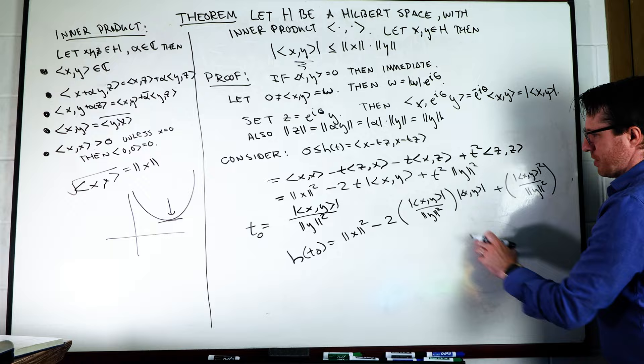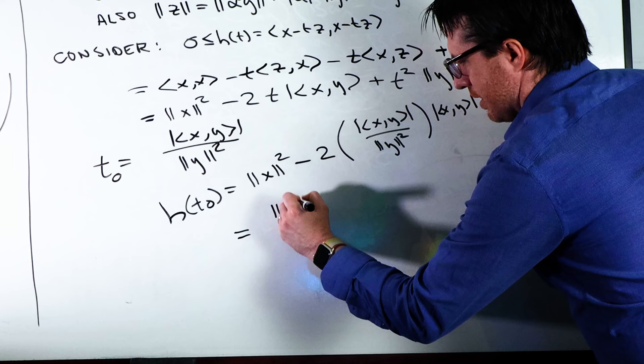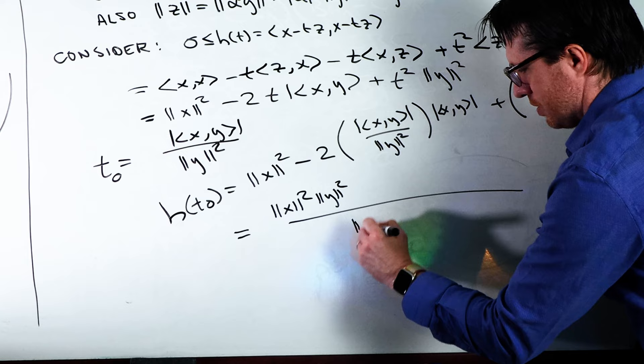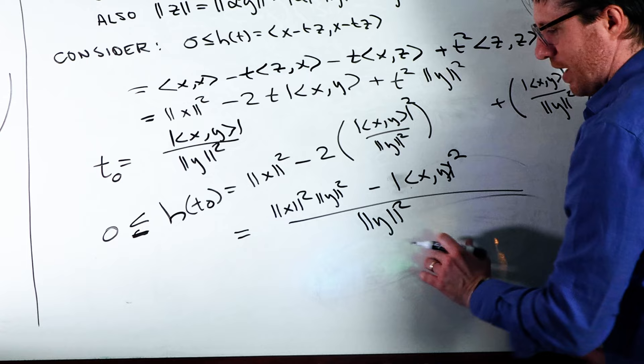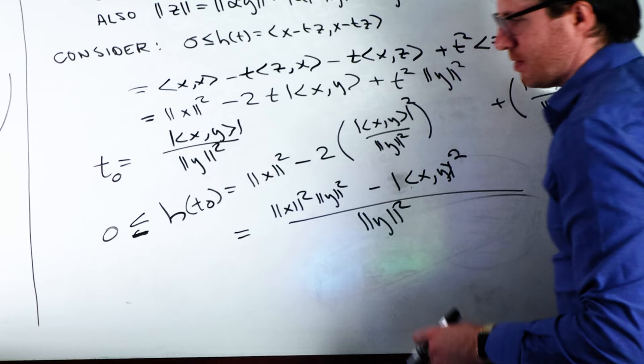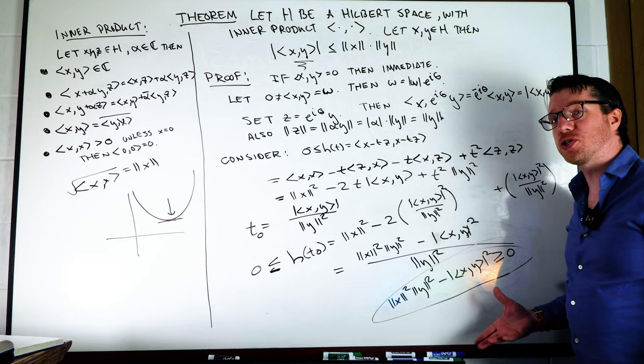I'm going to find a common denominator: ||x||^2 times ||y||^2, all of this divided by ||y||^2. This guy is going to combine with this guy to make a square. And so then these terms cancel, and it gives us this. We have a positive term on the bottom, and we have this is going to be bigger than or equal to zero, which means that this needs to be bigger than or equal to zero. And so this is the Cauchy-Schwarz inequality.